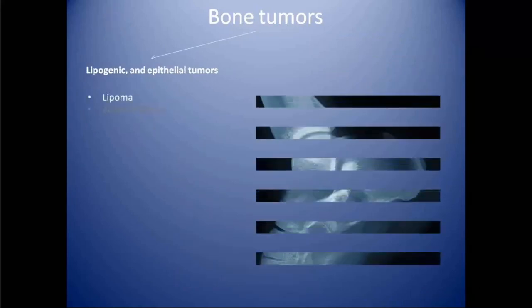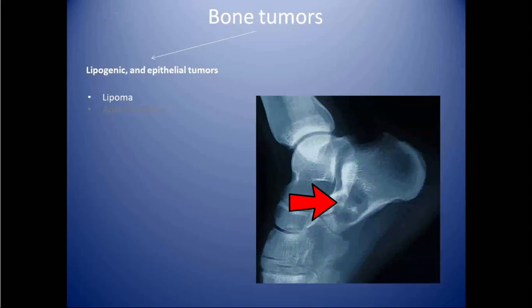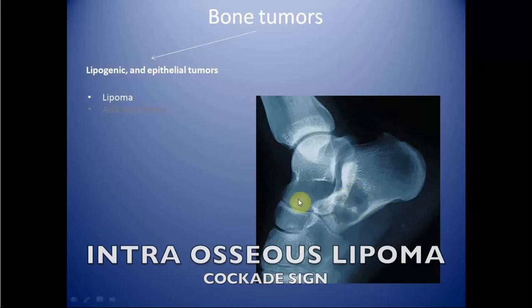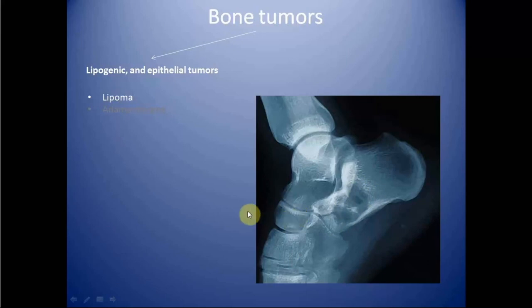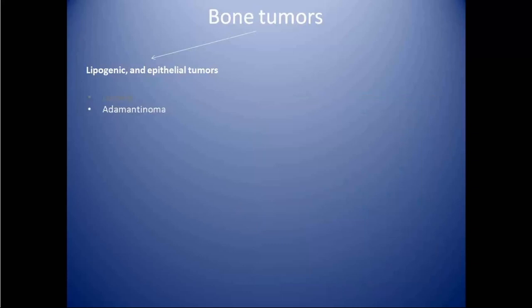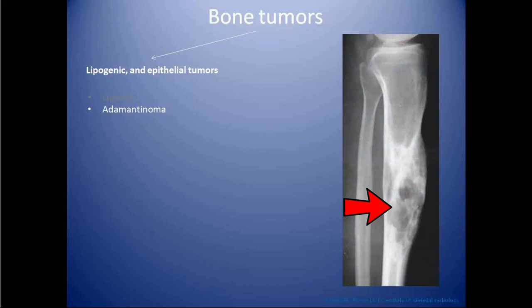Next is lipogenic and epithelial tumors. Lipomas are rare benign lesions predominantly seen in the lower limbs, and it is the most common calcaneal bone lesion. A lipoma in the calcaneum has a central calcification known as a dystrophic calcification. In the femur, it can be seen in the intertrochanteric region. Next is adamantinoma, which is a rare primary malignant bone tumor exclusively seen in the tibia in young adults. In rare circumstances it can metastasize to distant locations like the lungs. It is seen as a multilocular expansile osteolytic cortical lesion.